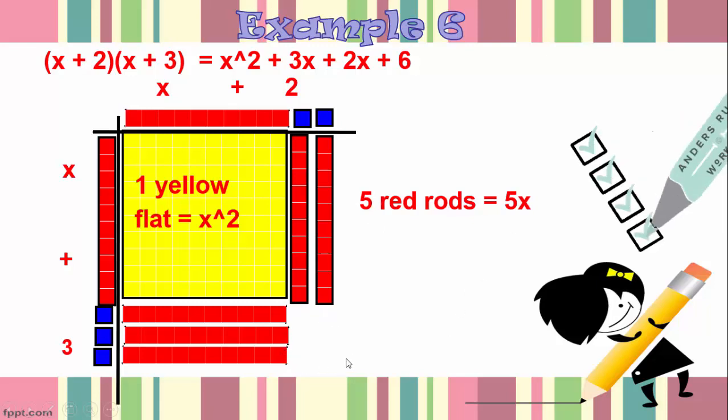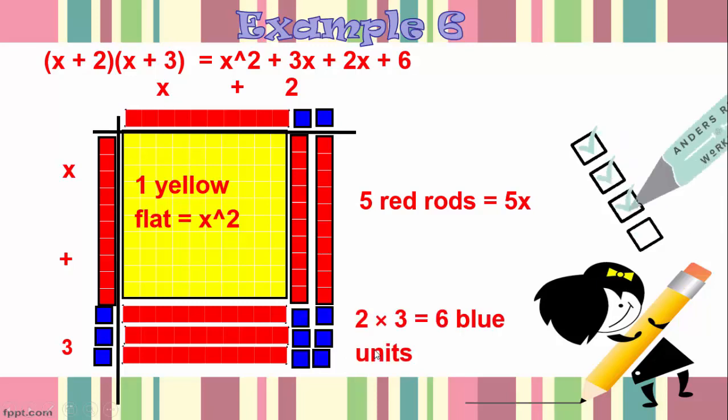And then the last bit we fill in the blue units. And we have 6 of these because 2 times 3 is equal to 6. So we fill in this little area with 6 blue units.